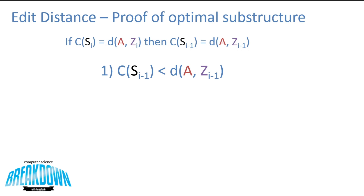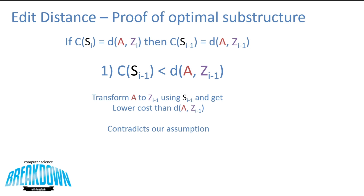Case 1: the cost of s at i minus 1 is less than the distance from a to z at i minus 1. This says there's some sequence of operations giving a cost less than the distance from a to z at i minus 1. But if this sequence existed, we could just transform a to z at i minus 1 using it and get a lower cost — which contradicts the assumption that the sequence performs optimally. So for this case, we're done.